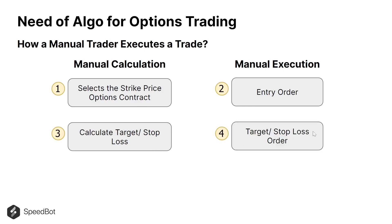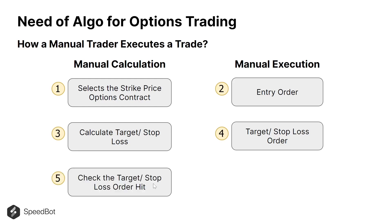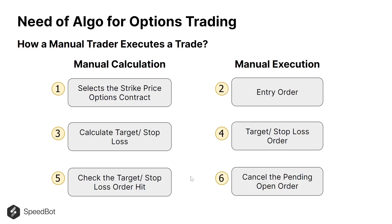Once the target and stop loss are calculated, it is the manual trader's responsibility to place those orders in the terminal or broker account. Then the trader must monitor whether the target or stop loss gets hit. If the position goes against the trader, the stop loss gets triggered, and the trader must manually cancel the pending target order — otherwise a reverse position is created and losses could be greater.